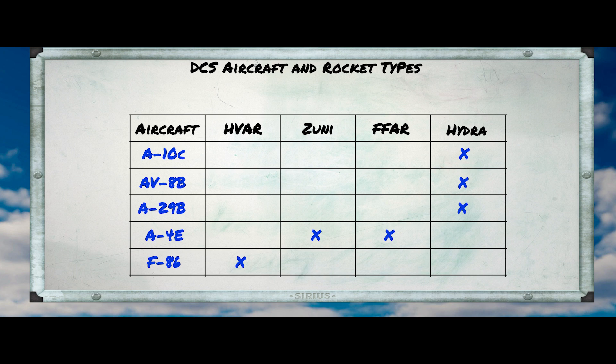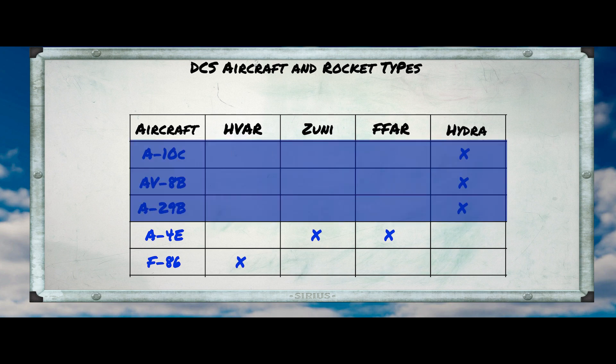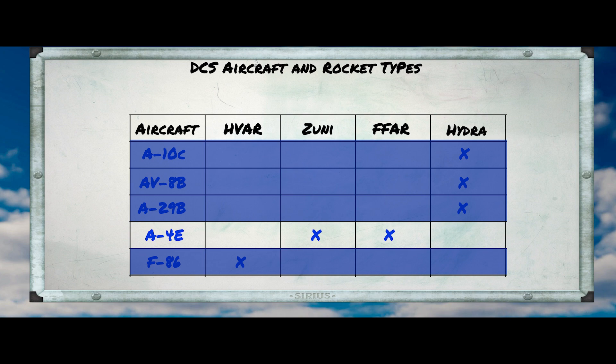These ones come with a CCIP pipper, so they're not all that interesting. I do own the F-86, but I haven't flown it a lot. I want to get it into this series — it's part of the reason why I wanted to do it — but I'm not really ready to try it just yet. So I think the obvious choice to start with is, of course, the A-4. So let's go to the range.